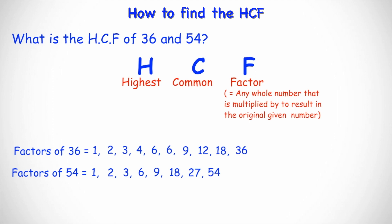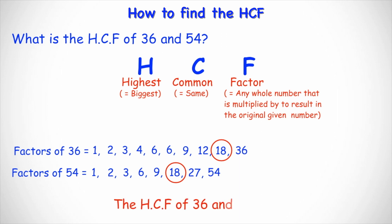Now we want to find the highest — the biggest — number that's common to both lists. We can see that 1, 2, 3, 6, and 9 all appear in both lists, but those are not the highest. The biggest number that's common to both lists is 18. So the HCF, or highest common factor, of 36 and 54 is 18.